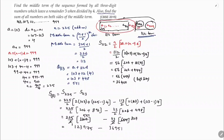Subtracting: 123,975 − 36,951 = 87,024. So 87,024 is the sum of all terms on the right side of the middle term.